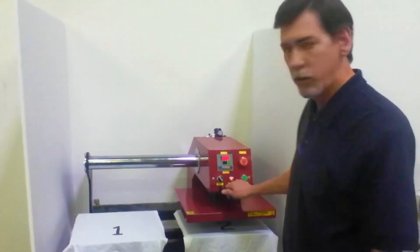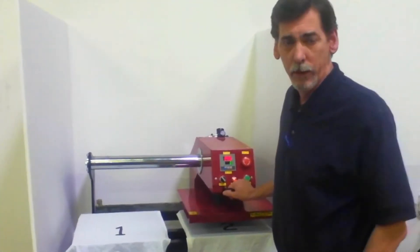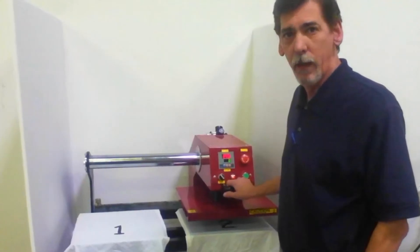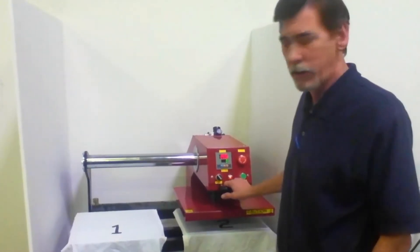This is our dual automatic heat press. It's got two 15 by 15 inch heat plates. It's a clamshell.